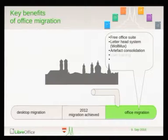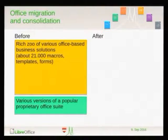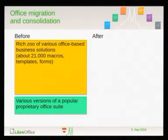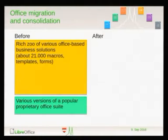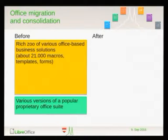Now a few words about the benefits of our office migration. Before this office migration and consolidation started, there were various versions of a popular proprietary office suite flying around in the city — you can infer the details. Built on that was a rich array of various office-based business solutions. In the course of the migration, about 20,000 macros, templates, forms, and whatever you can imagine doing with office were identified, and these had to be consolidated.